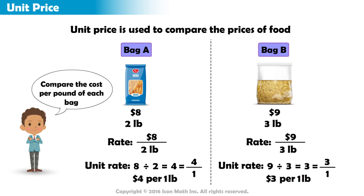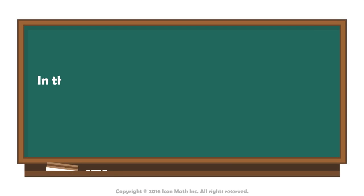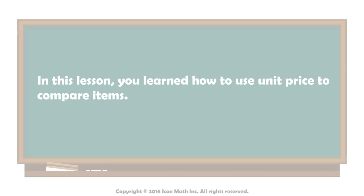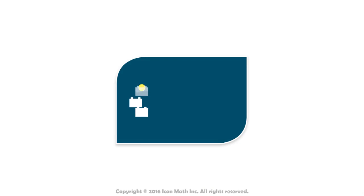Now that we have written each rate as a unit rate or unit price, we can determine which bag of macaroni is a better deal. Bag B costs less for 1 pound, so it is a better deal. In this lesson, you learned how to use unit price to compare items.